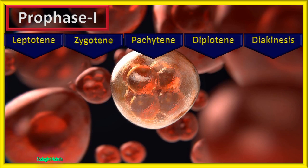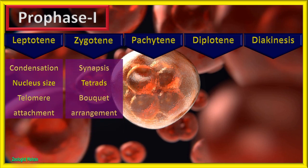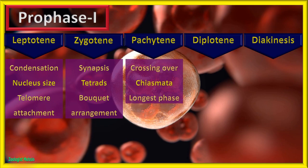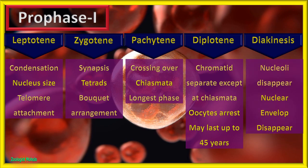Let's compare all five stages of prophase 1 briefly. In leptotene, condensation of chromosomes occurs and they become visible; nucleus increases in size and telomeres attach to the nuclear envelope. In zygotene, synapsis occurs, tetrads are formed, and bouquet arrangement is seen. In pachytene, crossing over occurs, chiasmata are formed, and it is the longest phase. In diplotene, chromatids separate except at chiasmata and oocyte arrest may last up to 45 years. In diakinesis, nucleolus and nuclear envelope disappear along with the other changes described.